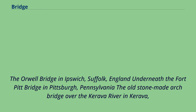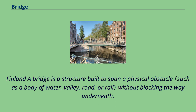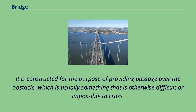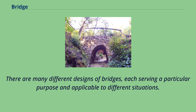In Pittsburgh, Pennsylvania, the old stone-made arch bridge over the Karava River in Karava, Finland. A bridge is a structure built to span a physical obstacle without blocking the way underneath. It is constructed for the purpose of providing passage over the obstacle, which is usually something that is otherwise difficult or impossible to cross. There are many different designs of bridges, each serving a particular purpose and applicable to different situations.